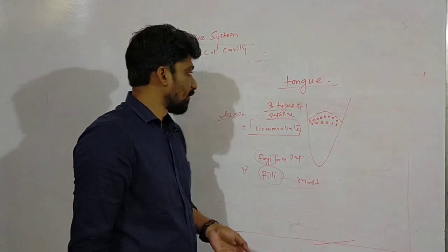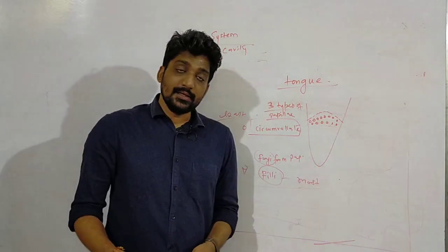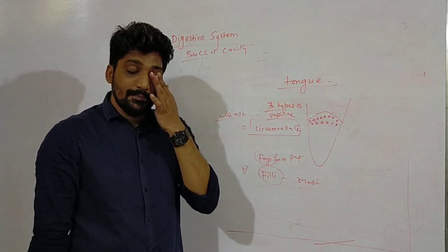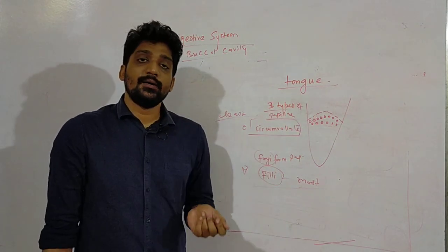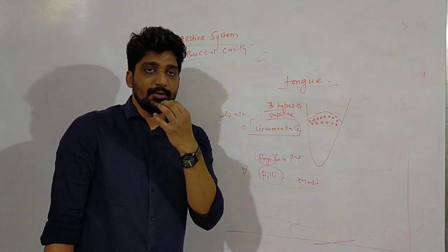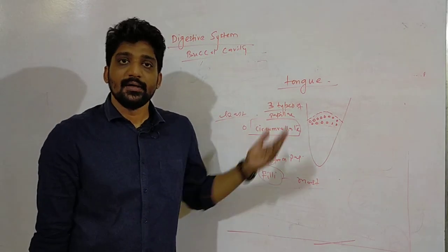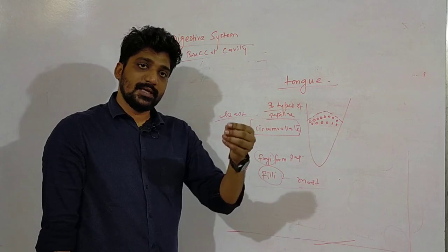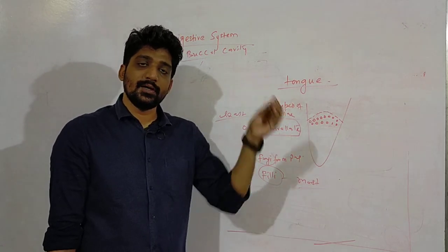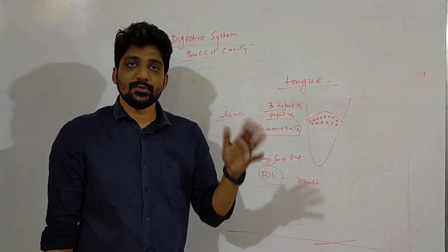Now one more thing - this tongue is very important because there is certain medicine which is sublingual. So the moment you keep on the tongue it directly goes to the brain because of that papillae only which takes the sensation and gives to the nerve that now carry the information to the brain.